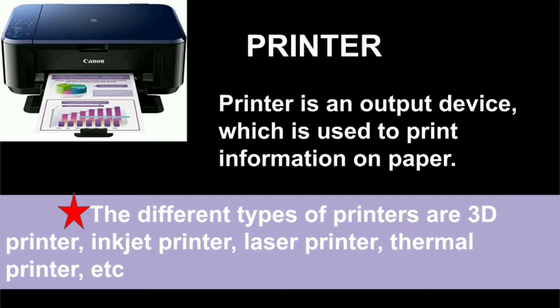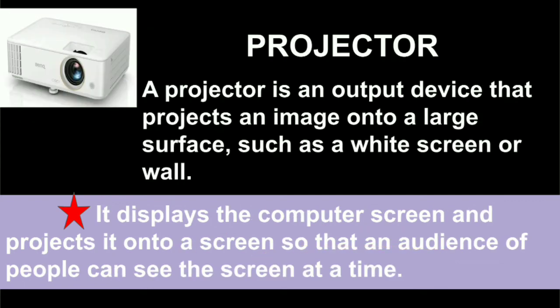Printer — it is an output device which is used to print information on paper. That printed paper is called a hardcopy. Many types of printers are available: 3D printer, inkjet printer, laser printer, thermal printer, etc.